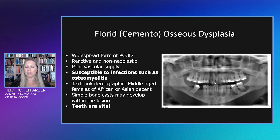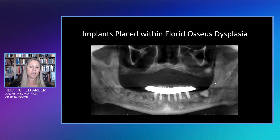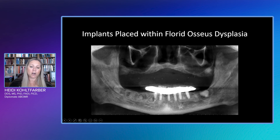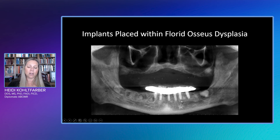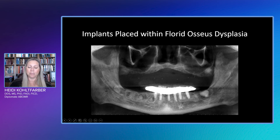They can have buddy lesions associated with it — our simple bone cysts. Remember, the teeth are vital. You don't want to place implants within these lesions. The research is mixed on whether you can place implants in patients that have a fibroosseous entity, but by and large, if you place the implant within a florid osseous dysplasia lesion, it's not going to osseointegrate correctly and it's not going to be a successful implant endeavor.